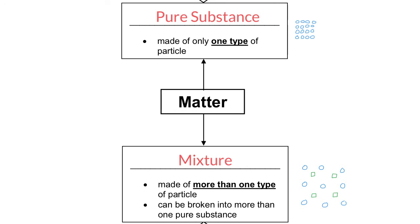I've illustrated the difference here. A pure substance has all just one type of particle, symbolized by the blue circles. Whereas a mixture would have more than one type of particle — blue circles and green squares. So a pure substance has one type of particle, and a mixture has more than one type of particle.